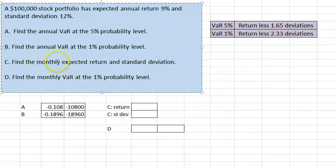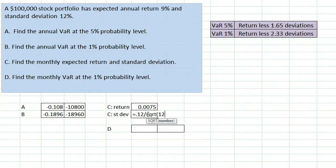Part C asks to convert the annual return and standard deviation to monthly measures. We can divide the annual return by 12 to get the monthly return. However, standard deviation doesn't quite work the same way. Instead, we divide by the square root of 12. In Excel, that is equals SQRT.